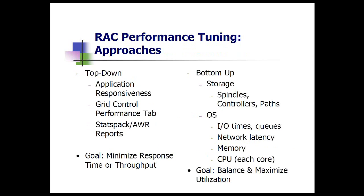A customer I recently worked with had a system with some performance problems. It was a smaller system, and one of their big questions was: this is not a RAC system, but should we buy RAC — will that help fix our problem? We looked at it from both the top and the bottom. From the top, we found about two or three reports performing very poorly with a lot of accesses. From the bottom, we saw a very large amount of IO utilization.